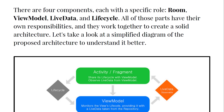There are four main components, each with a specific role. The Jetpack contains Android architecture components, and those architecture components contain four specific parts called Room, ViewModel, LiveData, and Lifecycle. All of these parts have their own responsibilities and work together to create a solid architecture.